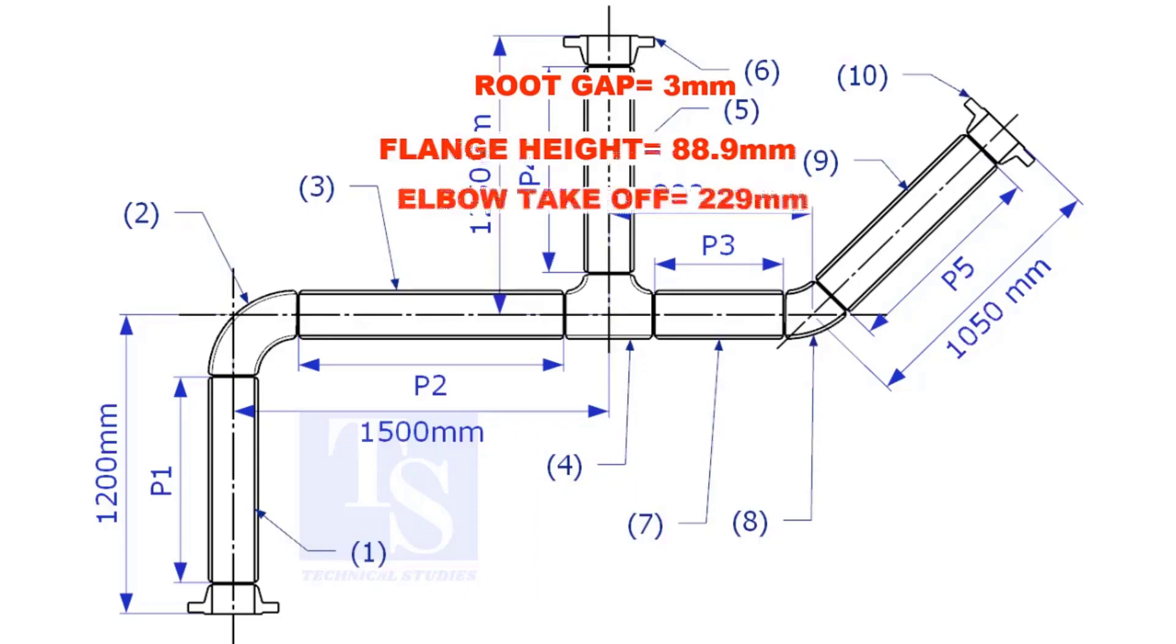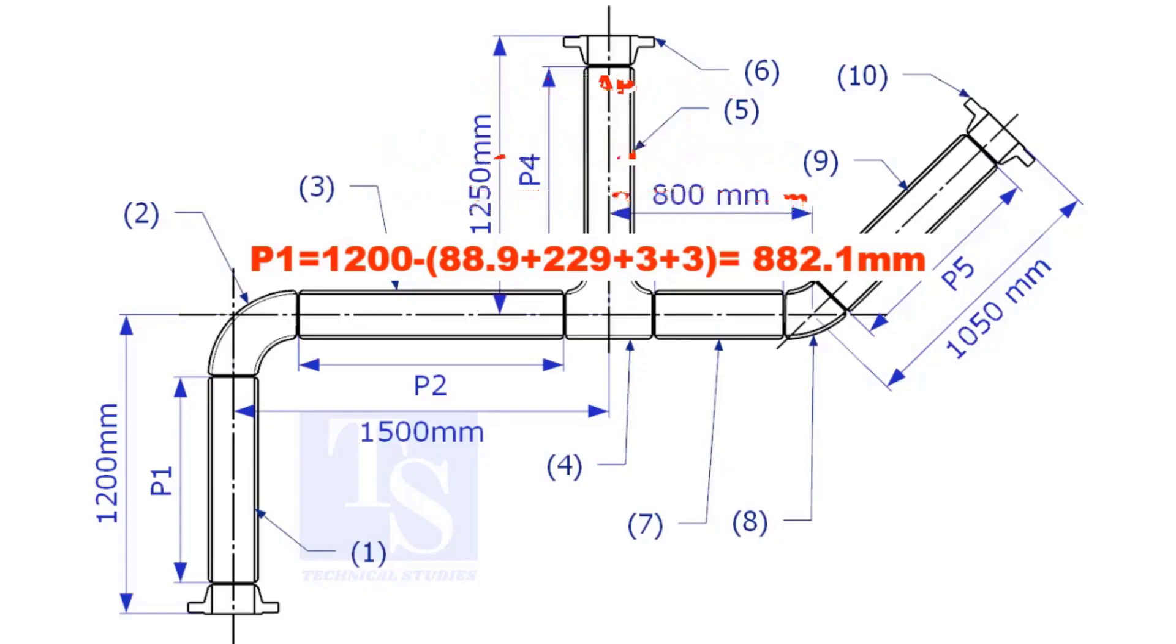Substitute the sum of the height of the flange, elbow takeoff, and two root gaps from the total length of 1500. Length of pipe P1 is 882.1mm.